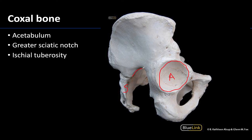The greater sciatic notch is located between the acetabulum region and the neighboring sacrum. As its name suggests, the sciatic nerve will traverse the greater sciatic notch along with many other neurovascular structures. The piriformis muscle also exits the pelvis through this notch heading toward the greater trochanter, and during life ligaments close this off to form the greater sciatic foramen.